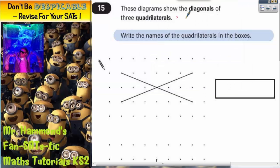Question 15. These diagrams show the diagonals of three quadrilaterals. Write the names of the quadrilaterals in the boxes.